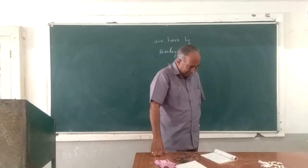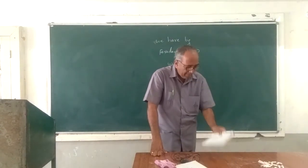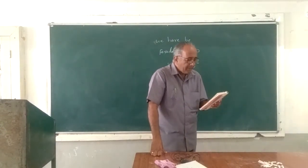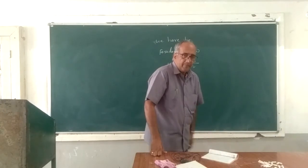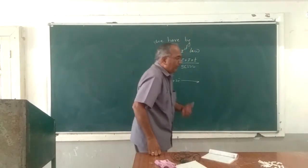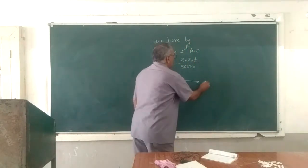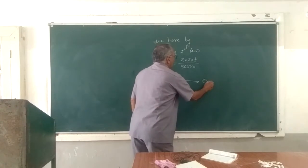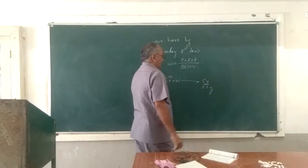Here, when you pass 1.25 amperes of current into chromium sulphate, the mass of the substance deposited is 1.3 grams. We need to find how much time is required to deposit 1.3 grams of chromium.